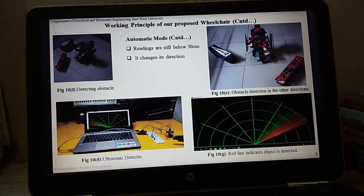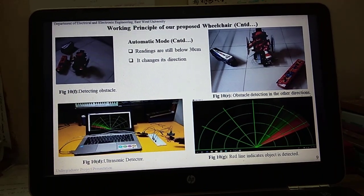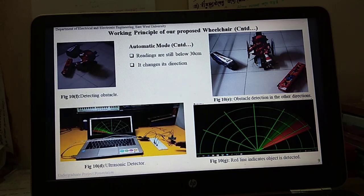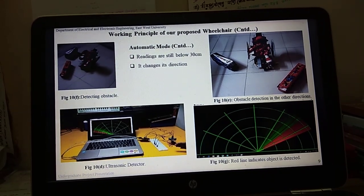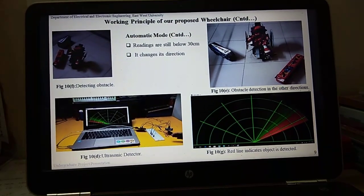While moving in other directions, again it detects obstacles in different positions. In that case, it changes its direction and the ultrasonic sensor continuously calculates the distance between the wheelchair and obstacle in front of it, and will turn to the side which gives maximum result.